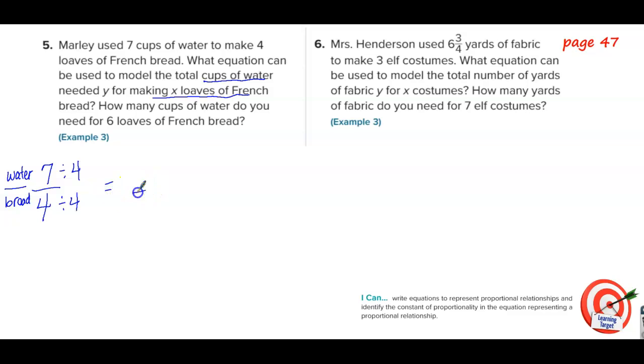We're going to need to divide the top and bottom by four. Four divided by four is one. Seven divided by four, there's a couple different ways you could write that. You could just write seven-fourths. Some of you are true lovers of mixed numbers which would be one and three-fourths. Either one of those would work. So if we're going to write an equation, we would write y equals seven-fourths x, or you could put y equals one and three-fourths x.